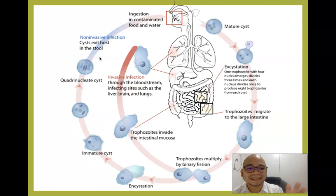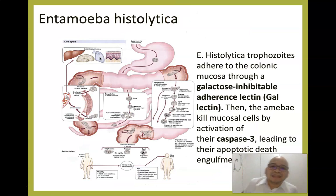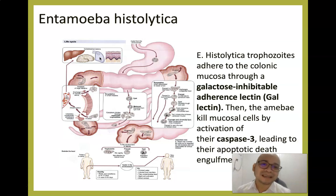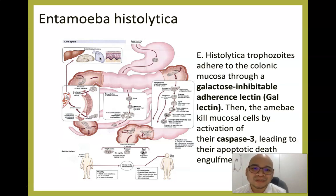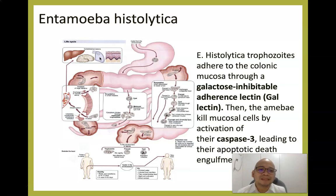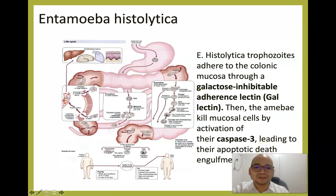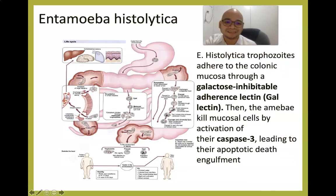Entamoeba histolytica trophozoites adhere to colonic mucosa through the galactose-inhibitable adherence lectin (Gal-lectin). This is one of the factors that causes invasiveness. The amoeba kills mucosal cells by activation of the caspase-3 pathway, leading to apoptotic death, and eventually engulfs them.